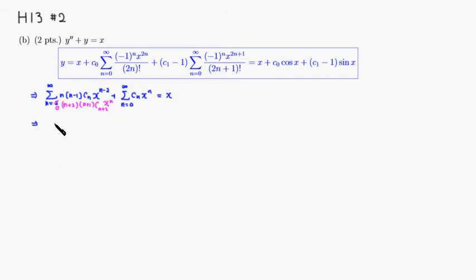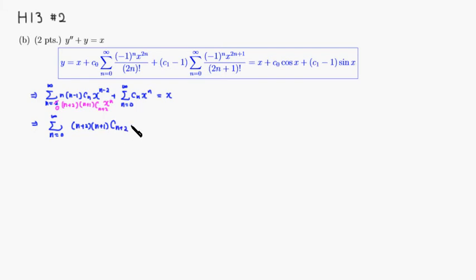So we have a summation from 0 to infinity of the quantity n plus 2 times n plus 1 times cn plus 2, plus cn, all times x to the n, and this equals x.